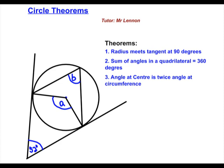So we're looking at another video of circle theorems. And in this video, we'll be looking at theorems where, one, radius meets tangent at 90 degrees. Whenever you see a radius meeting a tangent, it will be at 90 degrees.